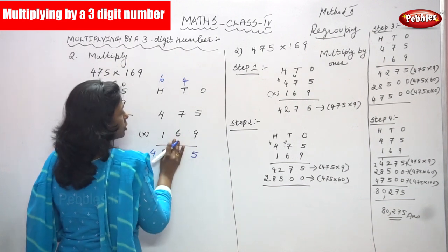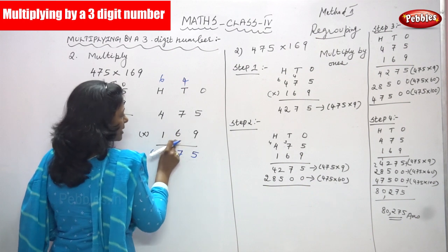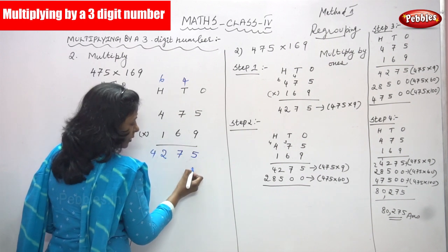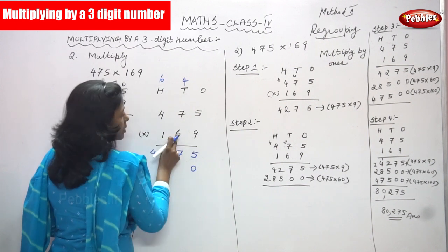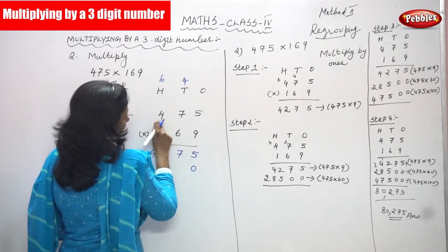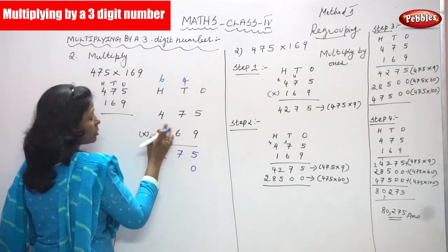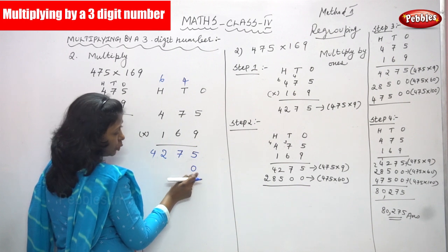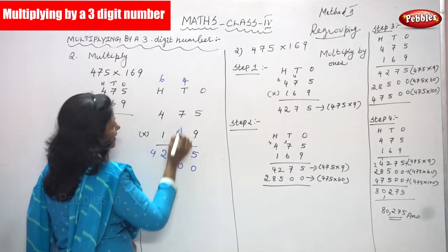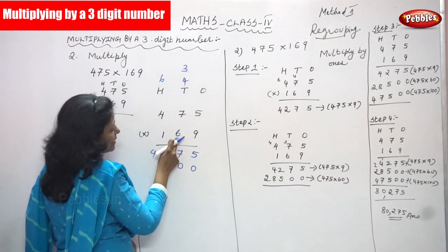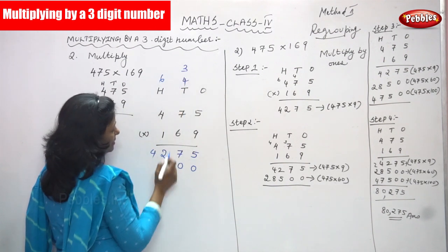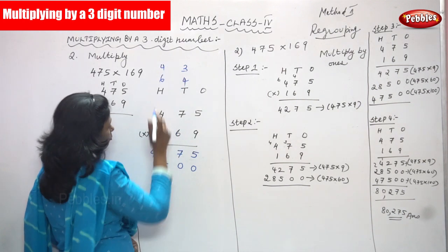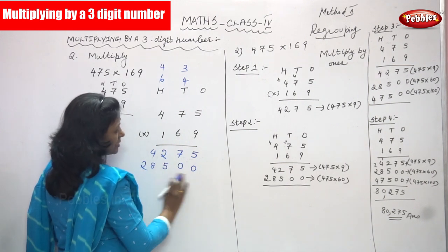Now I am moving on to the 10's place value. I am going to multiply by 6, so 475 multiplied by 6. I have told you already, put 0 in the 1's place. So: 6 fives are 30 — write 0, carryover 3. Then 6 sevens are 42; 42 plus 3 is 45 — write 5, carryover 4. Then 6 fours are 24; 24 plus 4 is 28. The 10's place row is done.